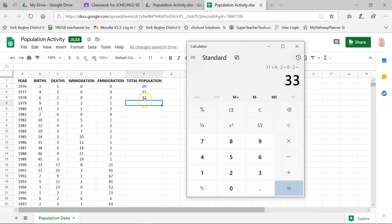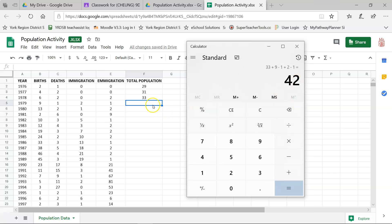Alright, so we start with 33. We had nine births. So plus nine. We had one death. So minus one. We had two immigration. So two came in. So plus two. And then we have one emigration. So one reindeer left the area. So minus one. And we get a 42. And I'll type that in.